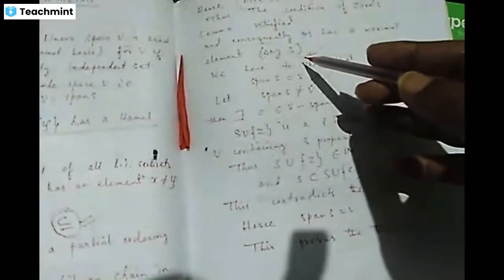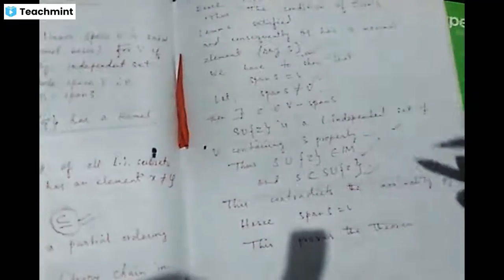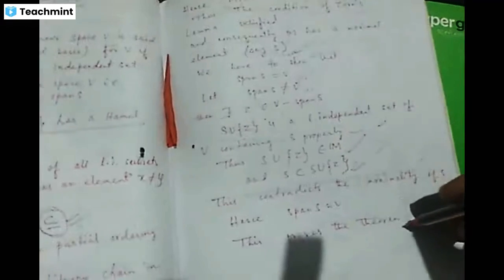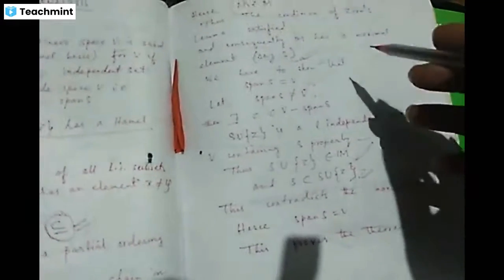We can say that S is the linearly independent set and also S spans V, so S must be the Hamel basis. We conclude that every linear space which is not equal to null must have a Hamel basis. This is our theorem. If you like this theorem, please like, share it with your friends, and visit my YouTube channel.